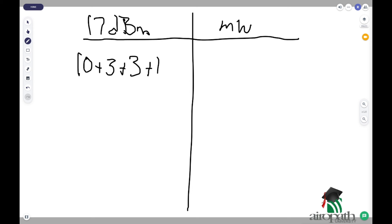Now, over on the milliwatts side, we're going to keep that 10. We're going to multiply that times a 2. And then we're going to multiply that times another 2. And then we're going to multiply that times the 1.25 substitution for the 1.